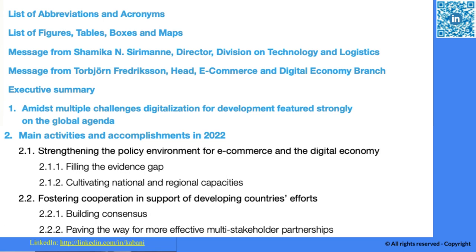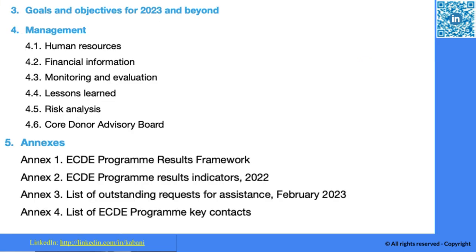This report also shares findings on the gaps and how we can fill them with evidence. It discusses how to cultivate national and regional capacities. Chapter 2 focuses on fostering cooperation in supporting developing countries' efforts — for example, building consensus and paving the way for effective multi-stakeholder partnerships, which is an area I specialize in through multi-stakeholder diplomacy with the UN and the Diplomacy Foundation.